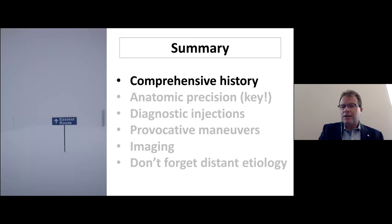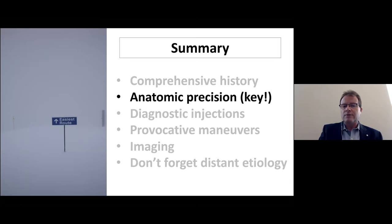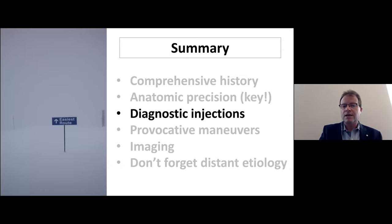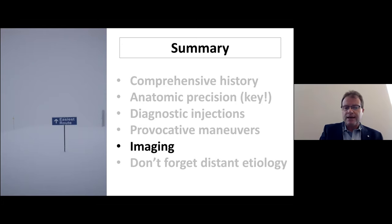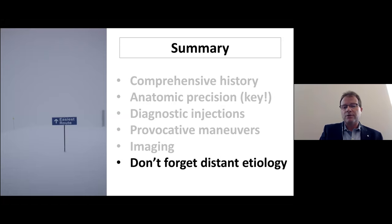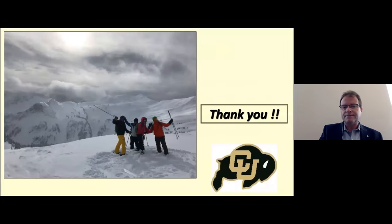In summary: a comprehensive history is critical. Be aware of key anatomic diagnostics — your finger is the important tool for being precise with where the patient's symptoms are located. Diagnostic injections and provocative maneuvers can be extremely helpful. Select your imaging correctly — adding an arthrogram to an MRI can increase sensitivity and specificity for critical injuries. And don't forget distant etiology for elbow symptoms if your exam doesn't show signs of local elbow pathology.